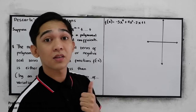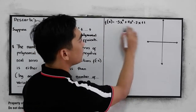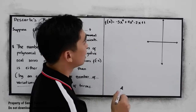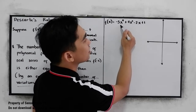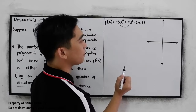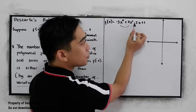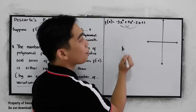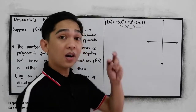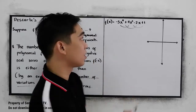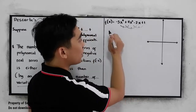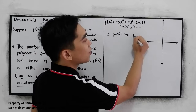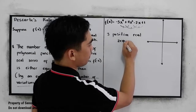Now we're going to find the positive real zeros for f(x). How many sign changes do we have? From negative to positive — that's 1. Positive to negative — that's 2. And negative to positive — that's 3. So there are 3 variations in our sign.